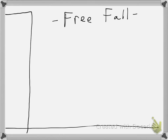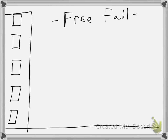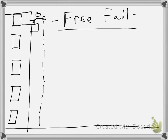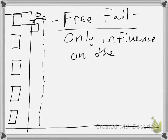But if I were to just drop any of these objects out of a window — say we're at the top of a fifth-story apartment with a balcony and I just drop a baseball — then as long as the only influence on the object is gravity, we're in what we call free fall.